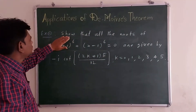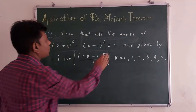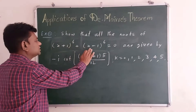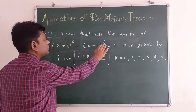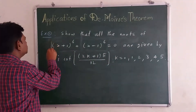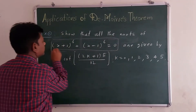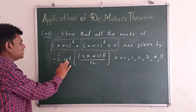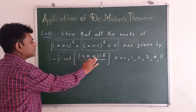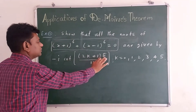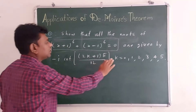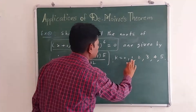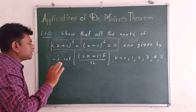Example: show that the roots of (x+1)^6 + (x-1)^6 = 0 are given by minus i times cos((2k+1)π/12), where k is equal to 0 to 5.